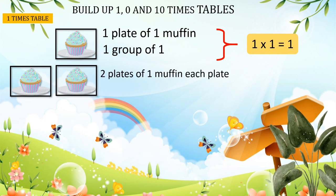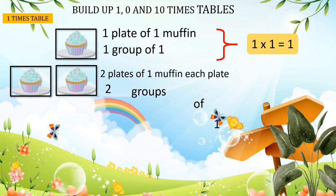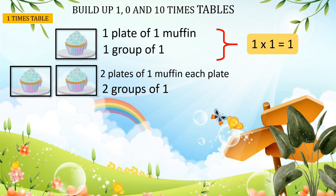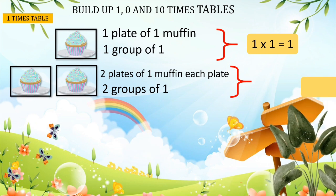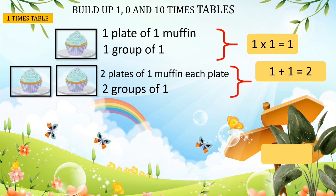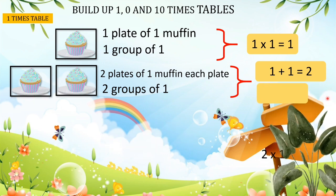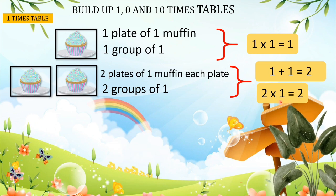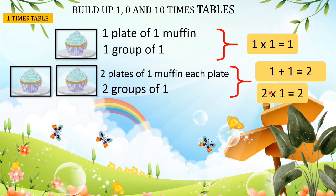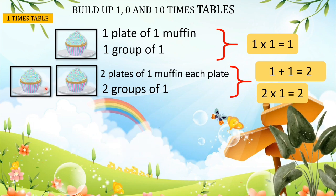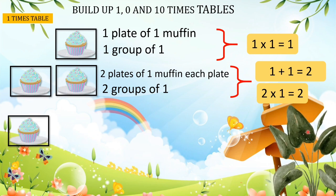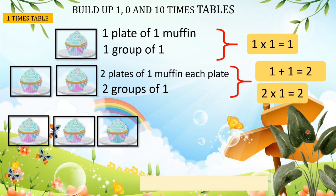Now we have two plates of muffins with one muffin in each plate, so we can say that is two groups of one. How many muffins altogether? We can use addition to find the total: one plus one equals two. Or we can use multiplication: two times one equals two. We repeated one plus one two times.